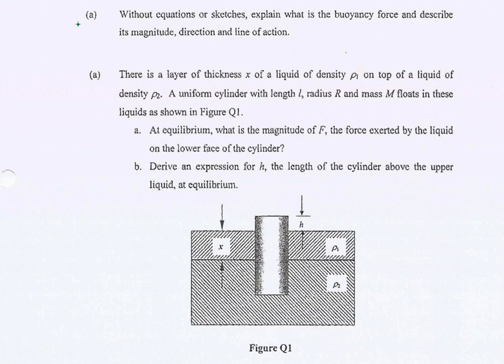There is a layer of thickness X of a liquid of density rho 1 on top of a liquid of density rho 2, meaning we have two types of liquid. A uniform cylinder with length L, radius R, and mass M floats in this liquid as shown in Q1. At equilibrium, what is the magnitude of F, the force exerted by the fluid on the lower face of the cylinder? Derive an expression for H, the length of the cylinder above the upper liquid at equilibrium.